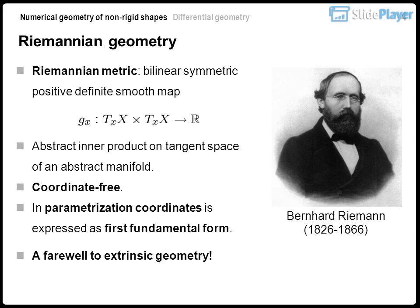Riemannian geometry introduces the Riemannian metric: a bilinear, symmetric, positive definite smooth map — an abstract inner product on the tangent space of an abstract manifold. In parametrization coordinates, this is expressed as the first fundamental form — a farewell to extrinsic geometry.